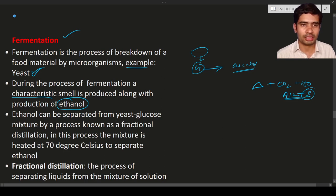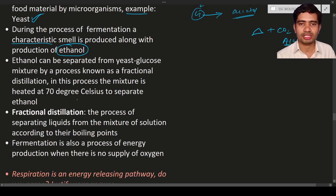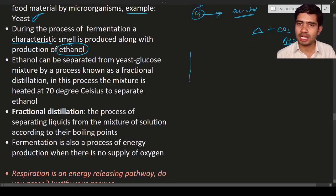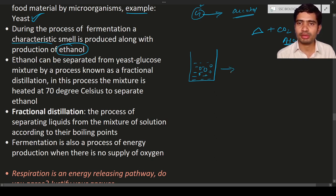What is meant by ethanol? Ethanol is a kind of alcohol. It is produced especially by yeast fermentation — yeast is going to produce ethanol or alcohol. Ethanol can be produced from the yeast-glucose mixture. Consider a container or reactor containing glucose solution with yeast present. After fermentation, ethanol is produced along with carbon dioxide and other compounds.